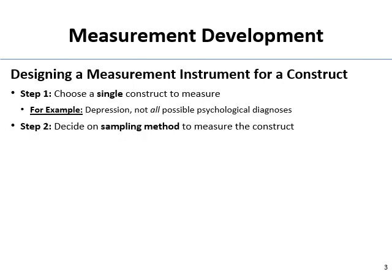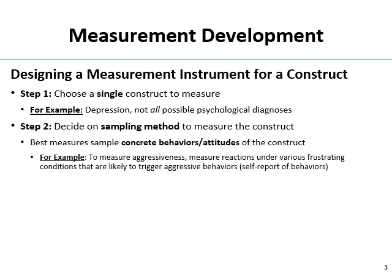Step two is deciding what sampling method you'll use to measure your construct. The best measures tap behaviors or attitudes associated with the construct rather than just asking opinions. For example, if you wanted to measure aggressiveness, you wouldn't just ask 'how aggressive are you, 1 to 5.' A better approach is to measure aggressive behaviors or how people would react in situations — like measuring reactions under various frustrating conditions. Road rage is an obvious one: 'Some guy cuts you off — how would you react?'